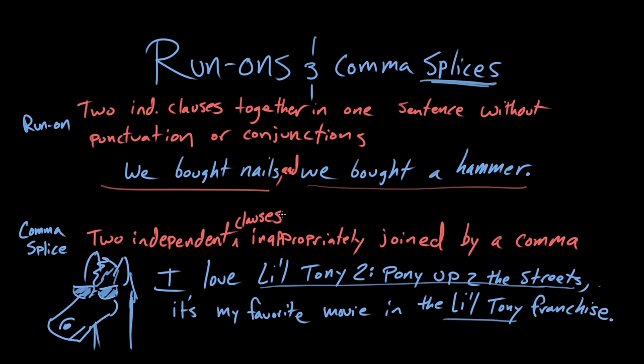We've got independent clause number one — remember, this could stand on its own as a sentence: I love Little Tony 2, Pony Up to the Streets. Period. And independent clause number two: it's my favorite movie in the Little Tony franchise. Period. We cannot join them with just a comma.